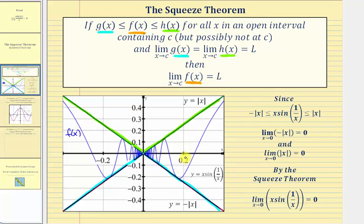Notice in this graph, the limit as x approaches zero of both g of x and h of x equals zero, and therefore it follows by the squeeze theorem the limit as x approaches zero of f of x also equals zero.